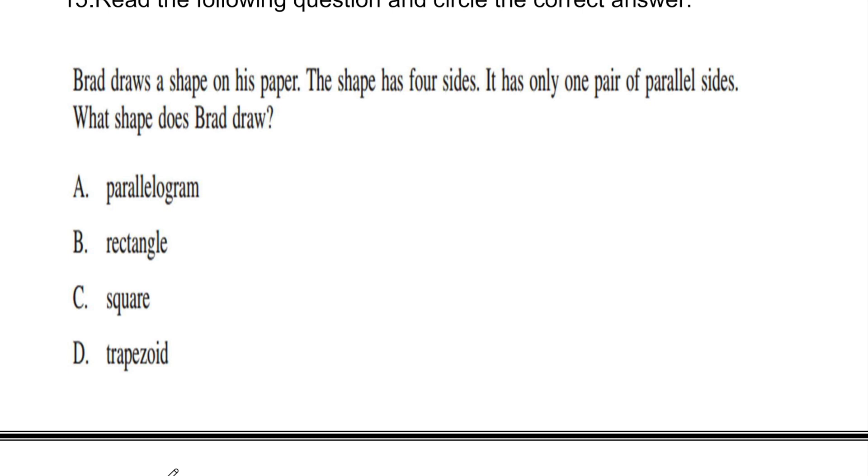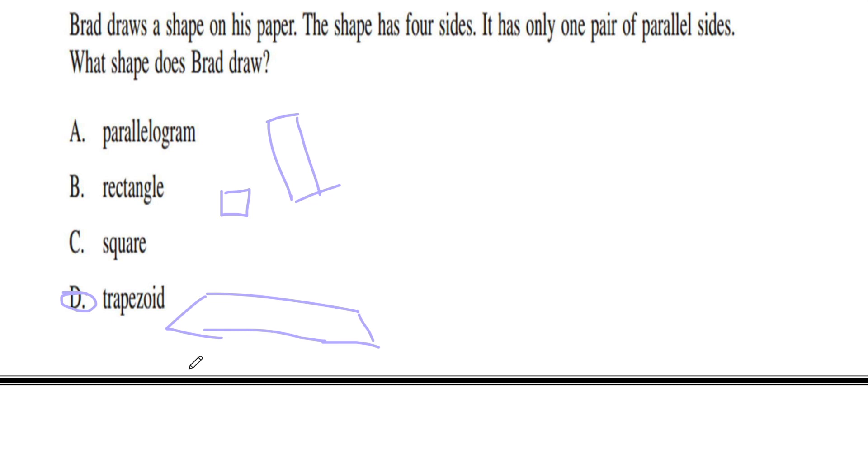Brad draws a shape on his paper. The shape has four sides. It has only one pair of parallel sides. What shape does Brad draw? A parallelogram has two pairs of parallel lines. A triangle obviously also has two pairs of parallel lines. A square also has two pairs of parallel lines. But a trapezoid is like this, it only has one pair of parallel lines. So the answer is trapezoid. D only has one.